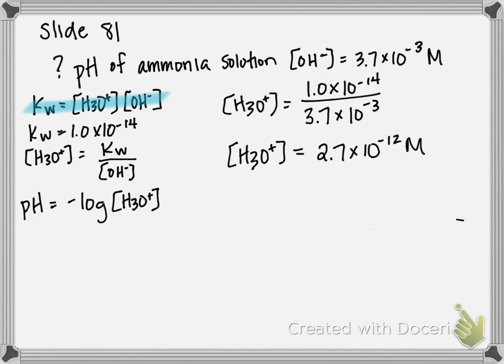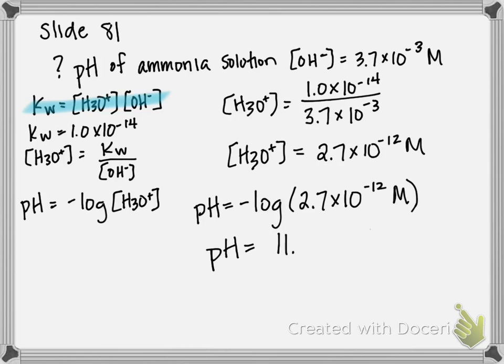Now that we have hydronium concentration, we can plug it into our pH equation. Remember, pH is the negative log of hydronium concentration. Therefore, pH is going to equal negative log of 2.7 times 10 to the negative 12 molar. If we plug that in, we get pH equals 11.57.